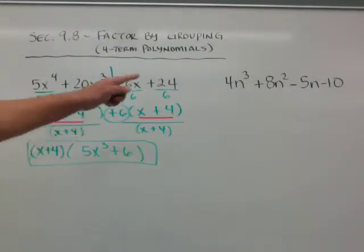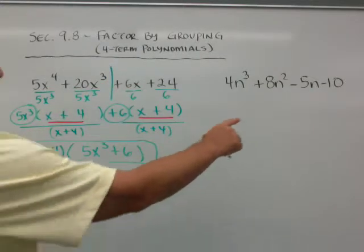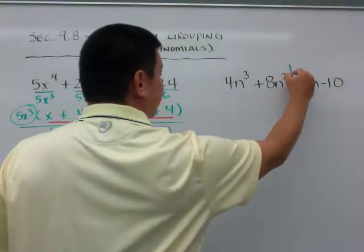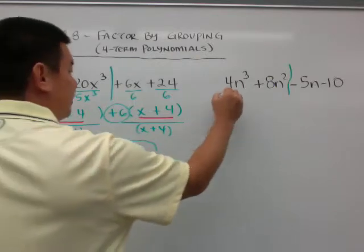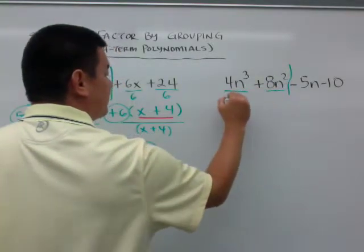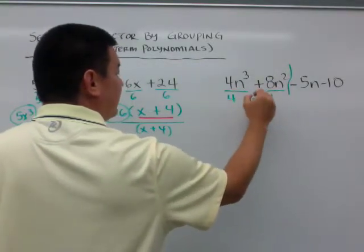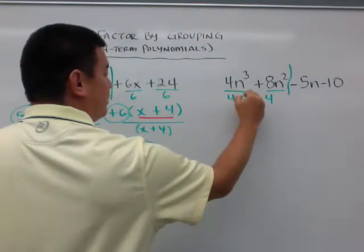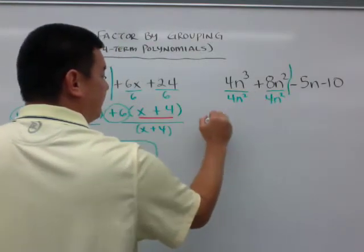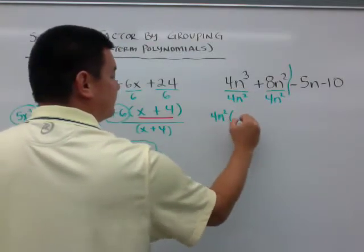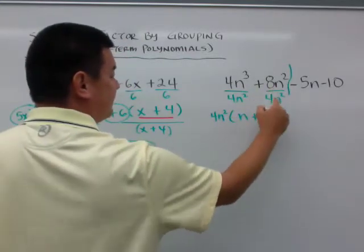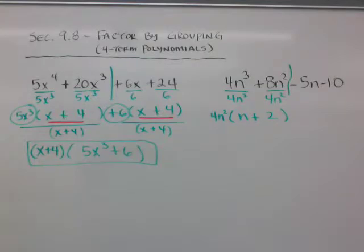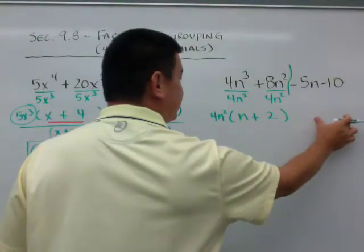If you didn't see it, I'll do another one, and I did one with a negative over here on purpose. So here it is — I'm going to cut it down in half. I need to pull out a common factor. I can see I can pull a 4, and I can pull two n's out, so n squared. And if I pull a 4n squared out on this side, I'm left with n plus — and if I divide this — a 2.